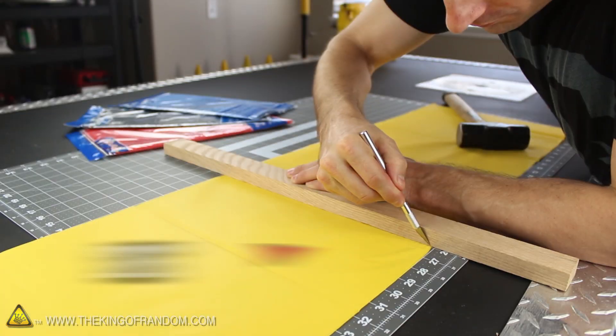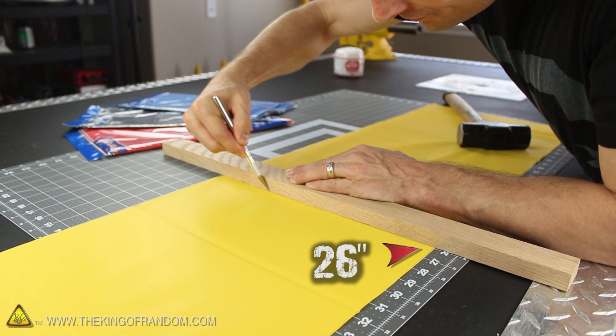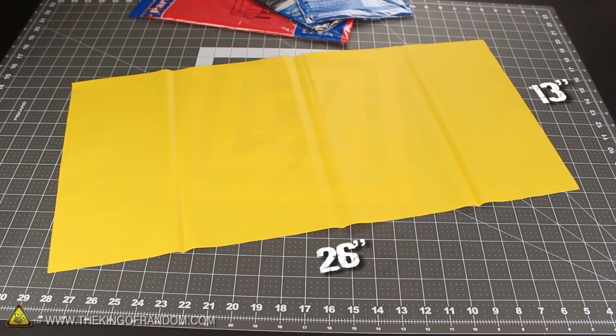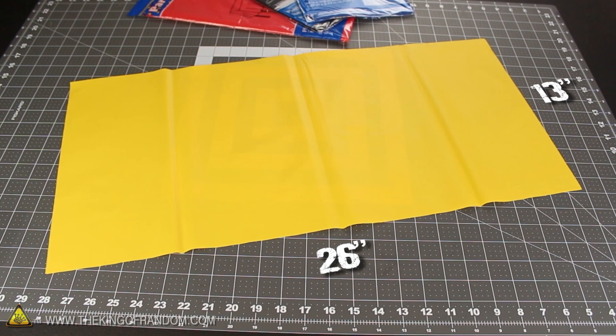Now that it's trimmed, go ahead and unfold the tablecloth lengthwise, then cut a piece exactly 26 inches from one of the ends. You should end up with a rectangle that's 13 inches by 26 inches, and you'll find that a quick and easy way to mass produce these into parachute canopies is with a little origami.